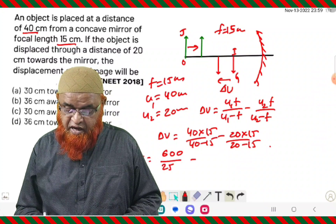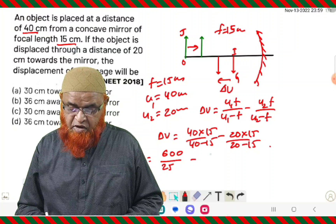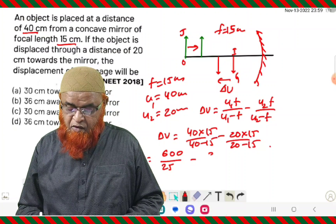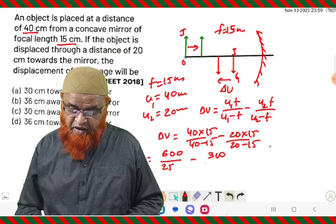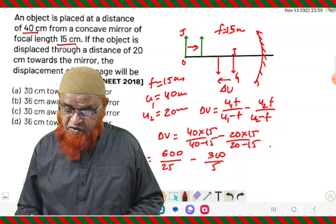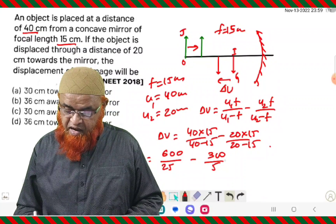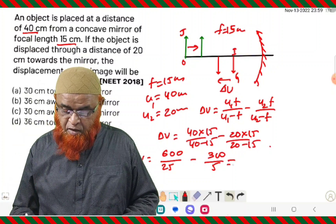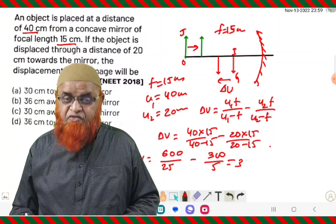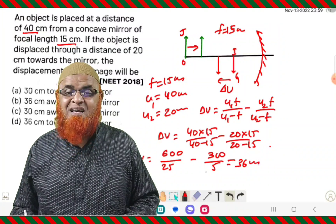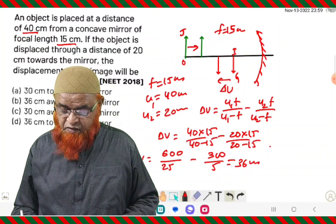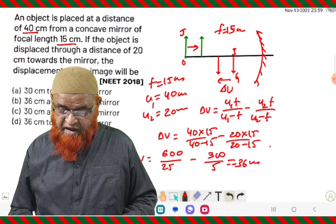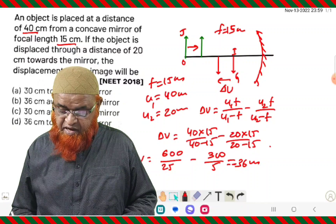Therefore Delta V equals 40 into 15, that is 600, you'll be getting 40 minus 15 is 25, minus 15 into 20 that is 300 divided by 5. You can make denominator and numerator equal by just multiplying, and finally you'll be getting the answer as 36 centimeters. If you want to check it out, you will be getting the answer minus 36 centimeters.